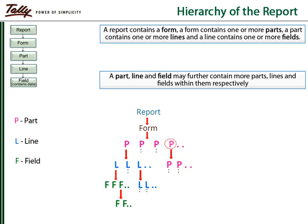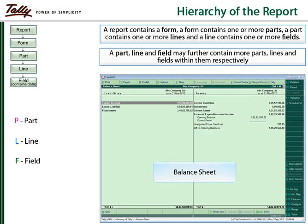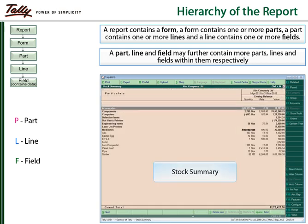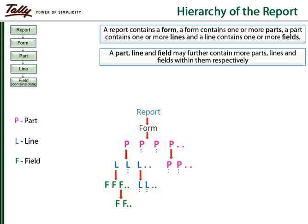A part contains a certain number of lines, and a line contains a number of fields. A part can further contain parts in the hierarchy, a line can further contain lines, and a field can further contain more fields within it. This gives more flexibility to the developer in designing the layout for different kinds of reports. It must be kept in mind that the hierarchy always ends at the field.